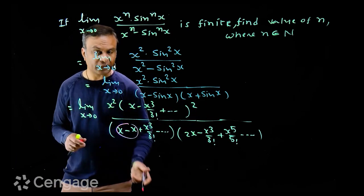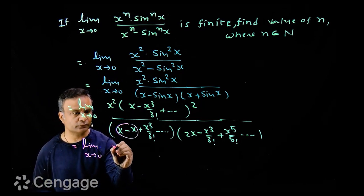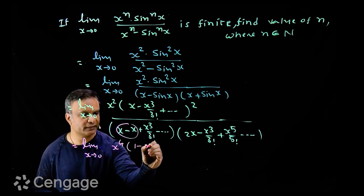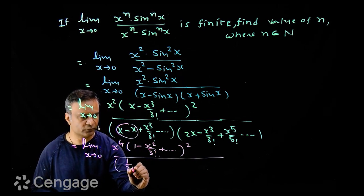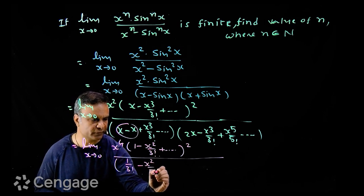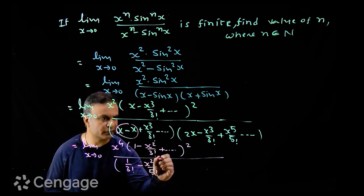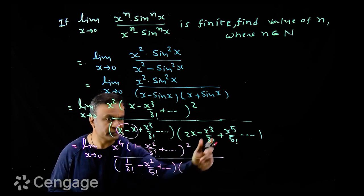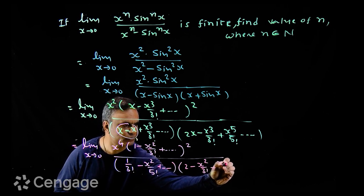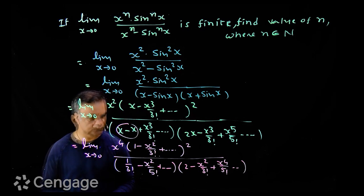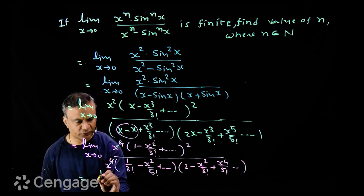From the first bracket we take x³ common, from the second bracket x common, and from the squared term x² common. This gives x⁴ in the numerator with the bracket (1 minus x²/3! + …)². In the denominator, taking x³ common leaves (1/3! minus x²/5! + …), and taking x common from the other factor leaves (2 minus x²/3! + x⁴/5! + …). The x⁴ then cancels out.